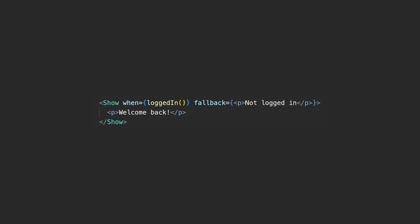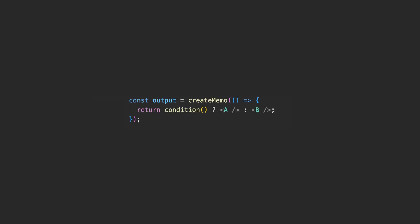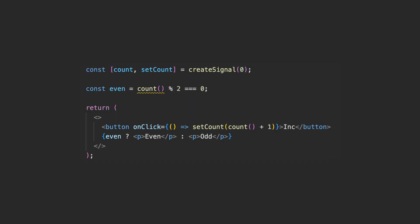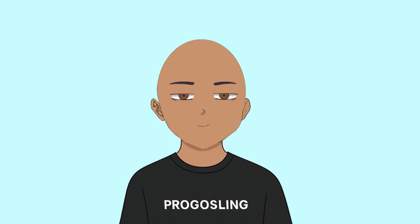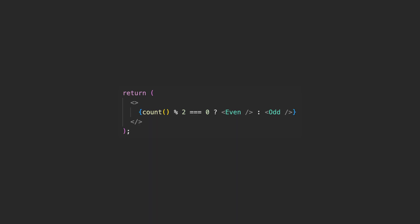Conditional rendering in Solid looks like this — or like this. But this won't work. Here, 'even' is evaluated once at initialization because 'count' is called outside of JSX. Solid doesn't track 'count' as a dependency for 'even', so updating 'count' won't trigger a re-evaluation. If you want conditional rendering inside your function, do it like this.